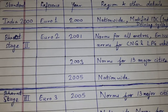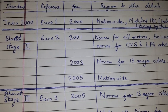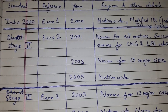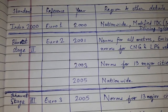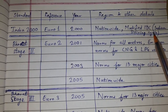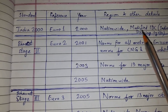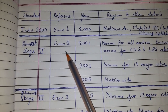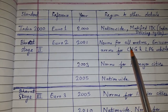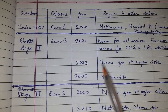The first standard was India 2000, with reference to Euro 1, implemented in the year 2000, applied nationwide, using the modified IDC — Indian Driving Cycle. Then Bharat Stage 2, referencing Euro 2, came in 2001 as the norm for all metros, including emission norms for CNG and LPG vehicles.